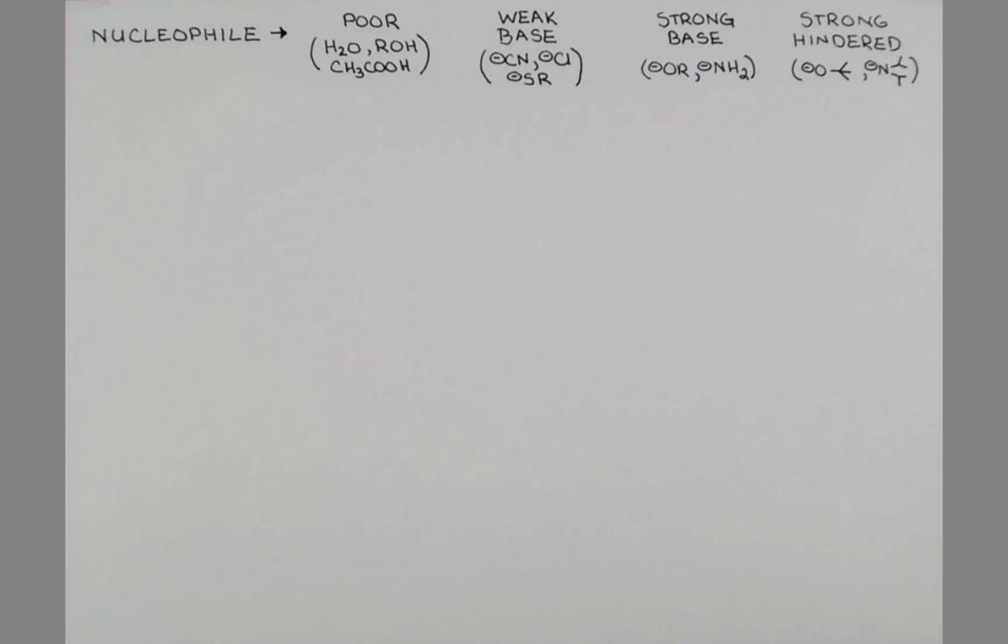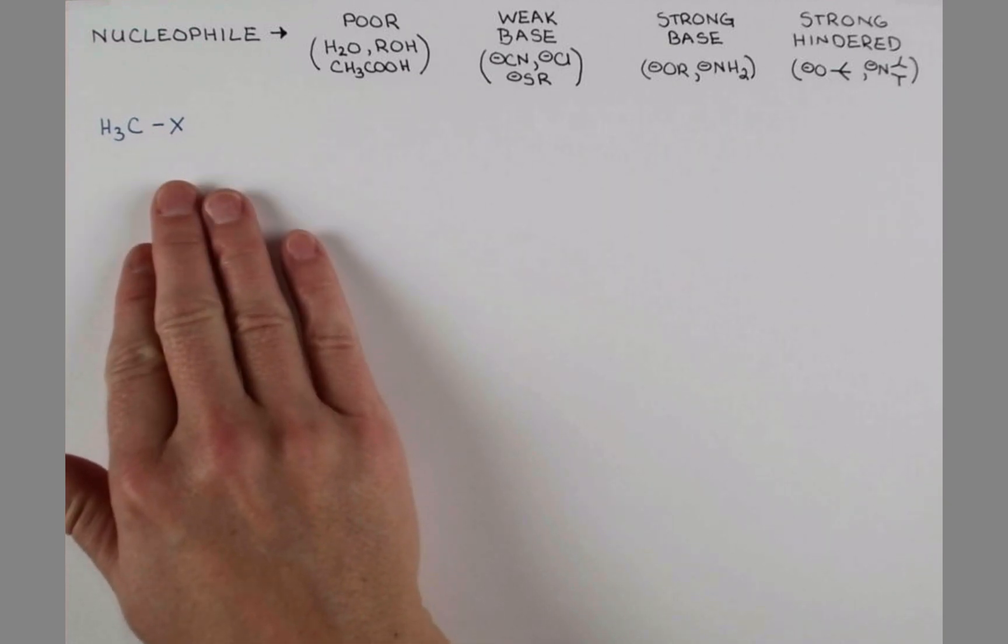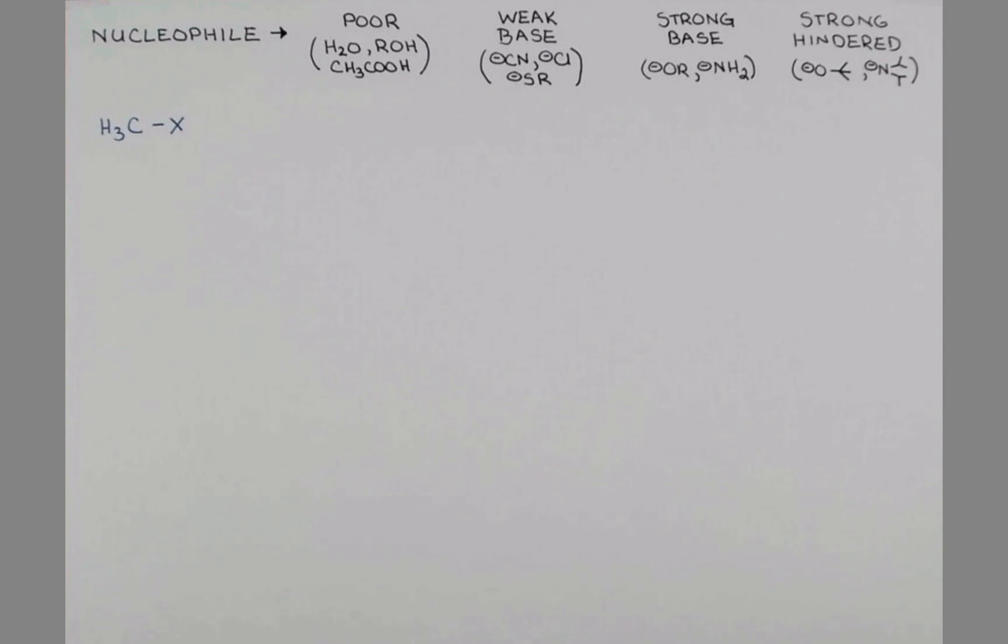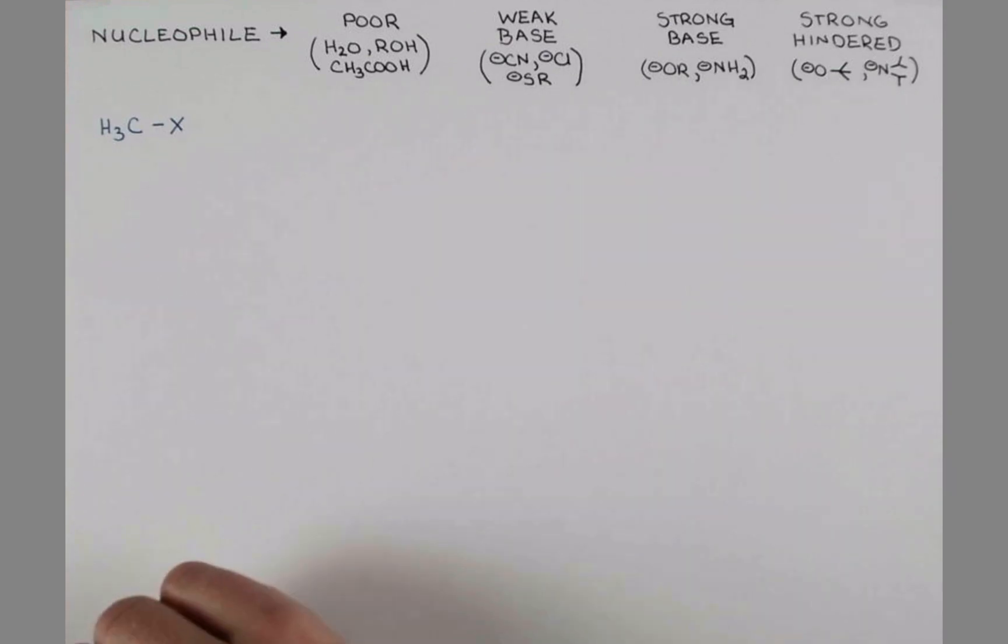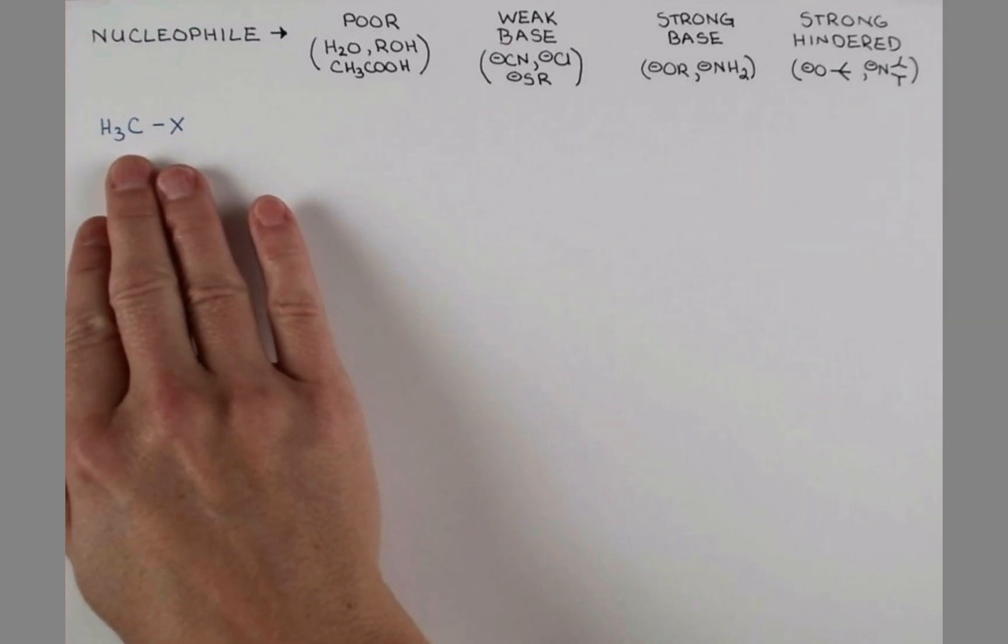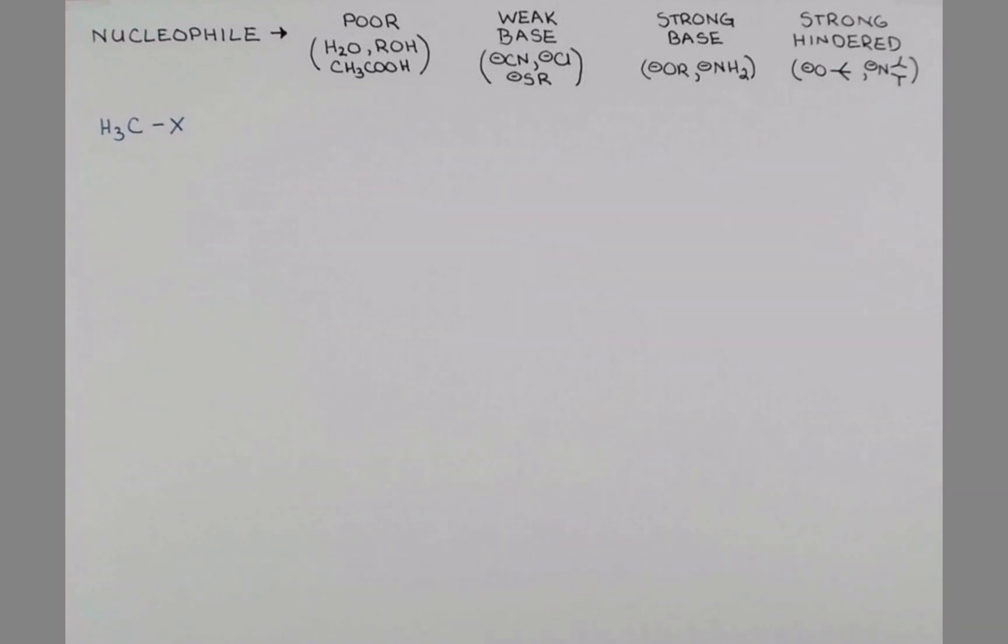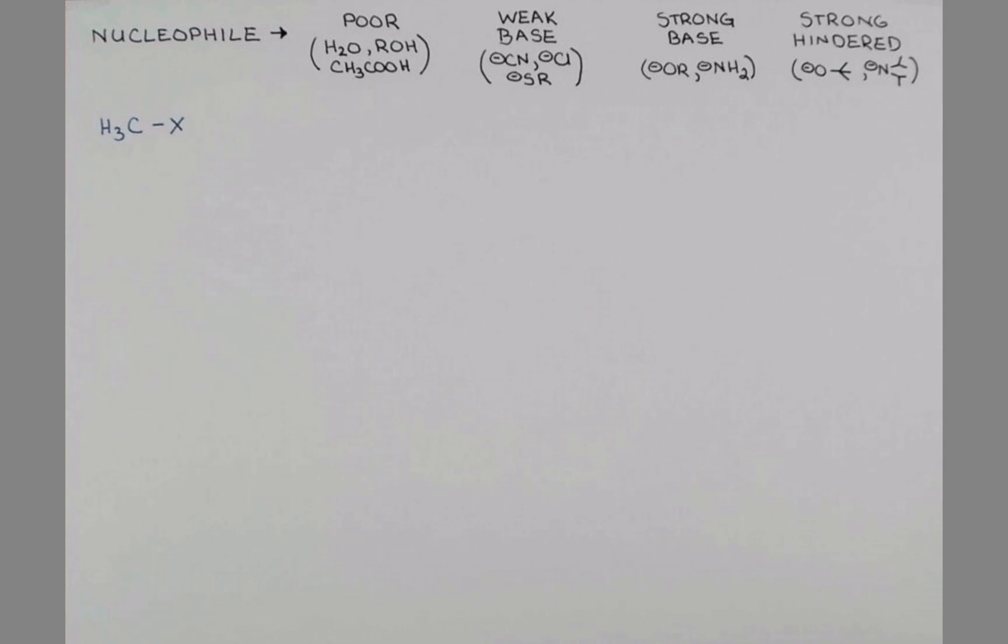The simplest substrate with a leaving group that we can have is methyl. X will represent our leaving group, whether it's bromo, chloro, tosyl, any of our good leaving groups. One thing to note right away about the methyl substrate is that elimination is not available to this substrate. When we do elimination, we're forming a carbon-carbon double bond. This substrate only contains one carbon, so the only mechanism that's available to us is substitution.